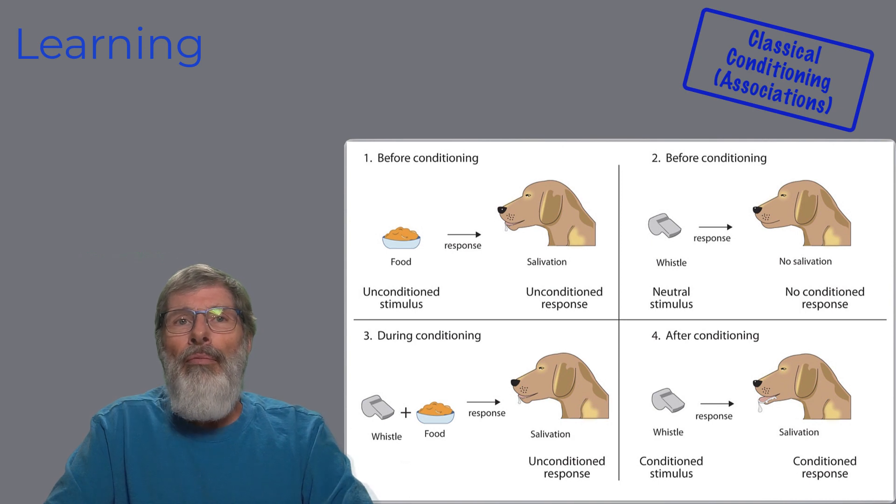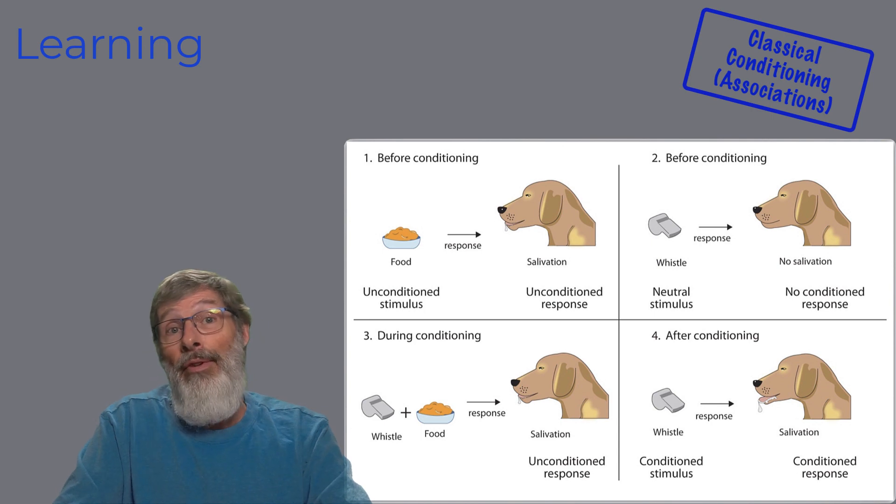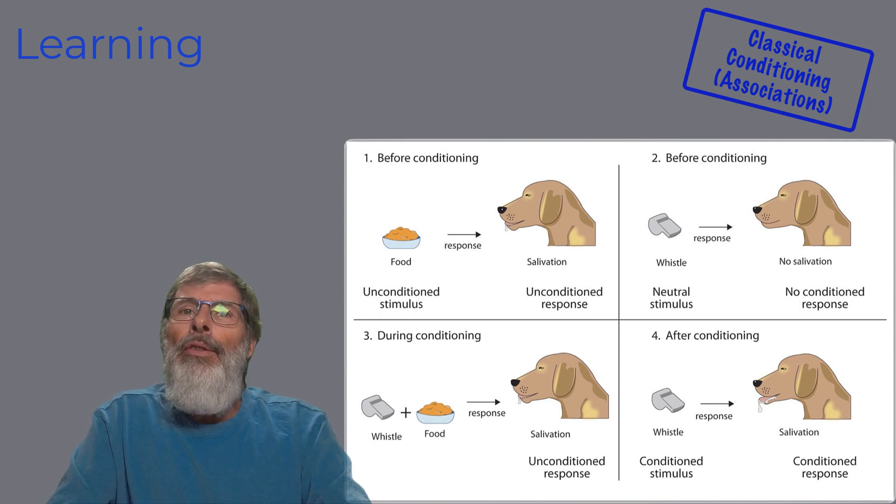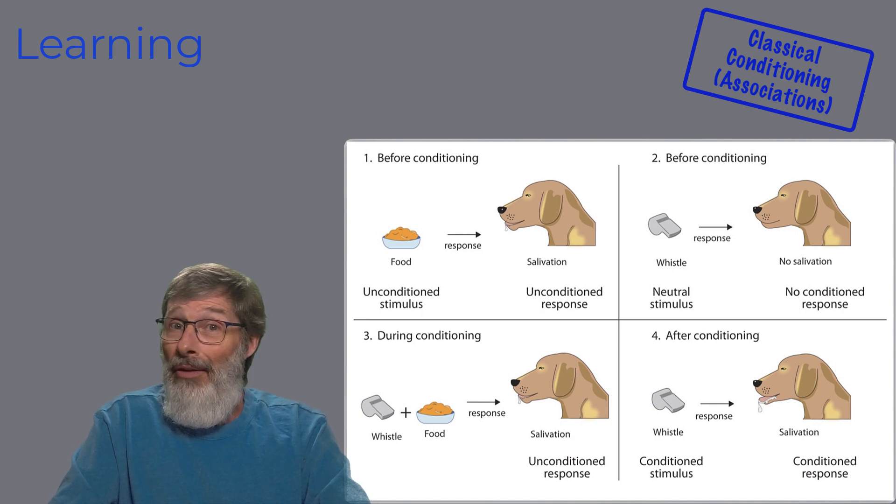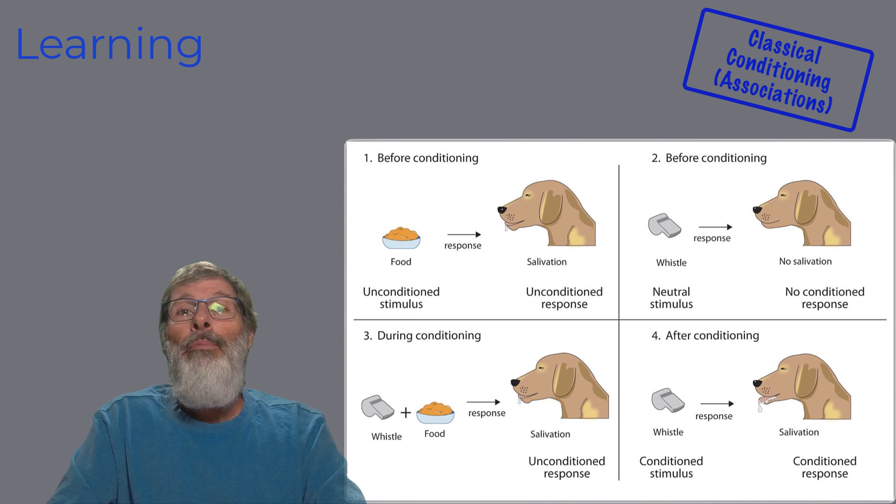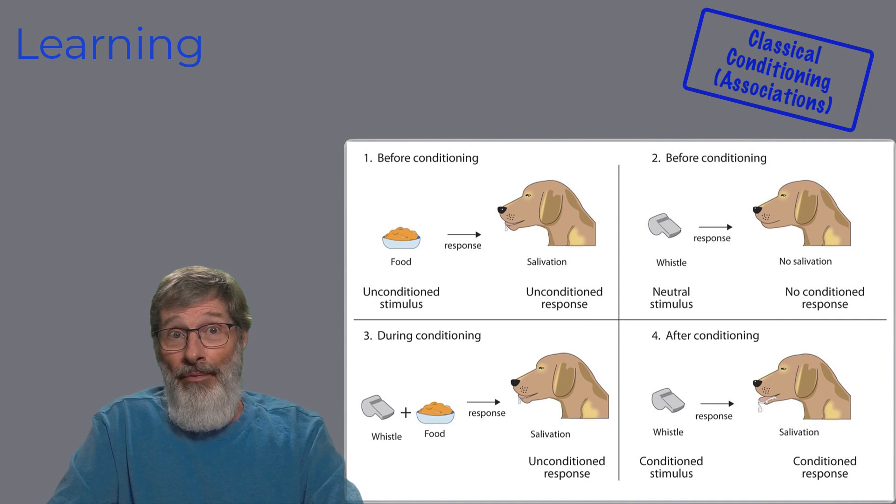The unconditioned stimulus, the UCS, is unlearned. Pavlov's meat powder elicited the salivation, which was unconditioned response from the dogs. There's such a thing as what's known as orientating reflex, the automatic response of the dogs to look in the direction of the sound. It was a new and novel stimulus. When the dogs learned to salivate to the sound of the bell, previously that bell was neutral, the bell became the conditioned stimulus. And the salivation in response to the bell is known as the conditioned response.